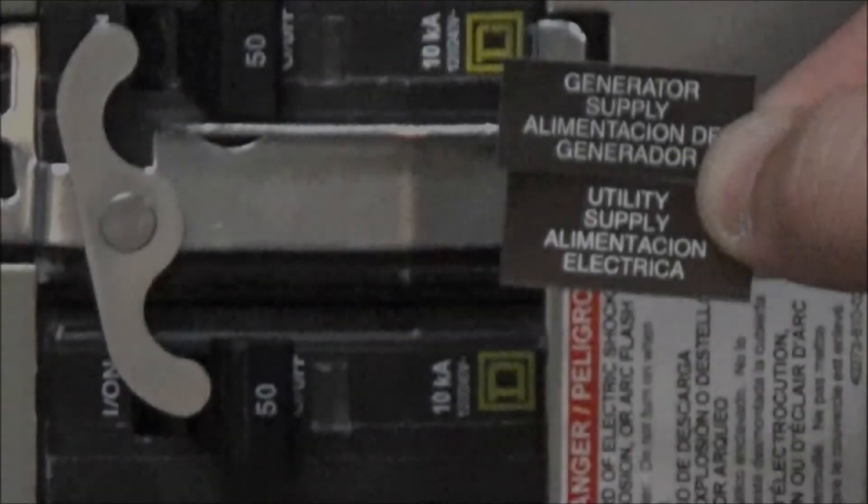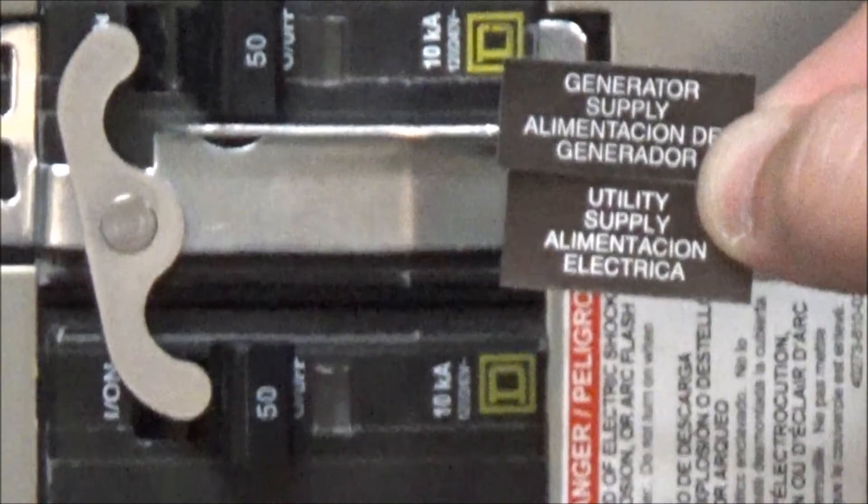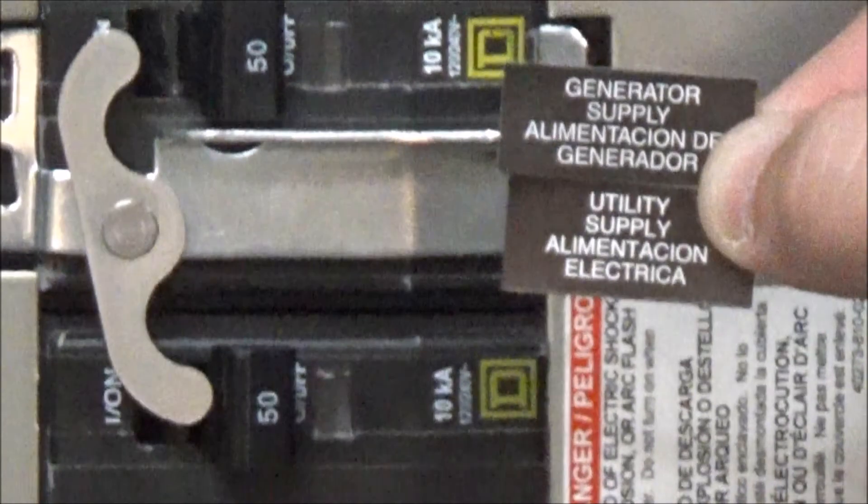You'll then install your generator supply and utility supply labels onto the appropriate breakers.